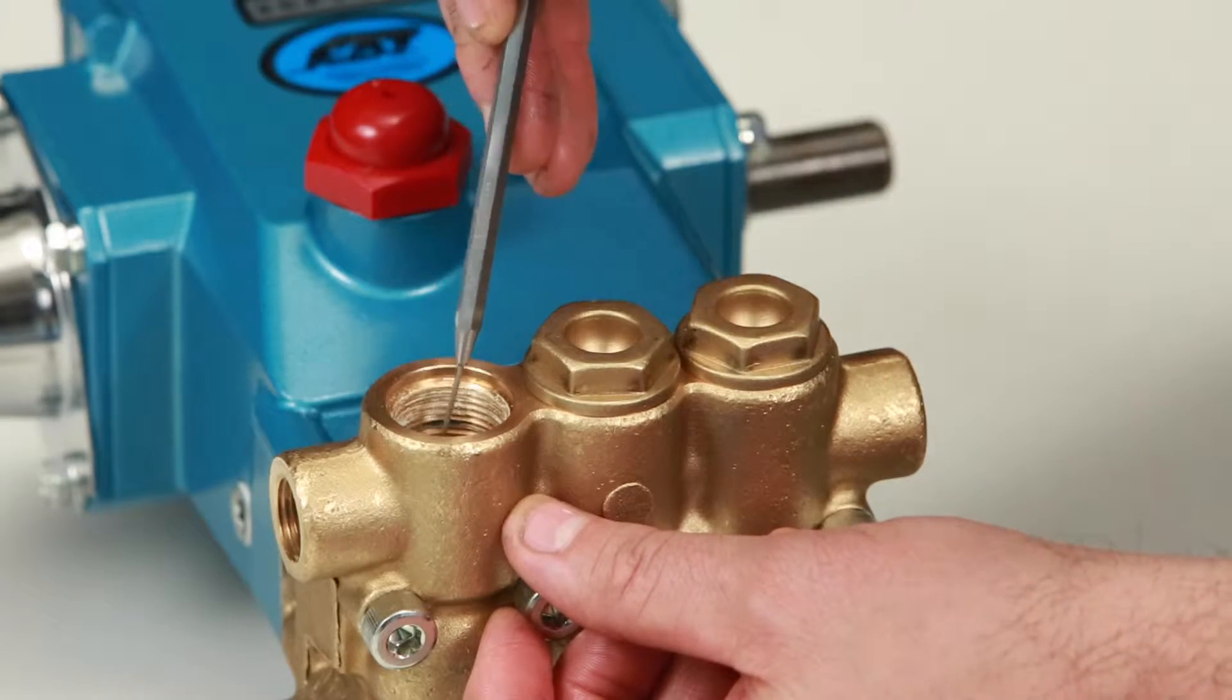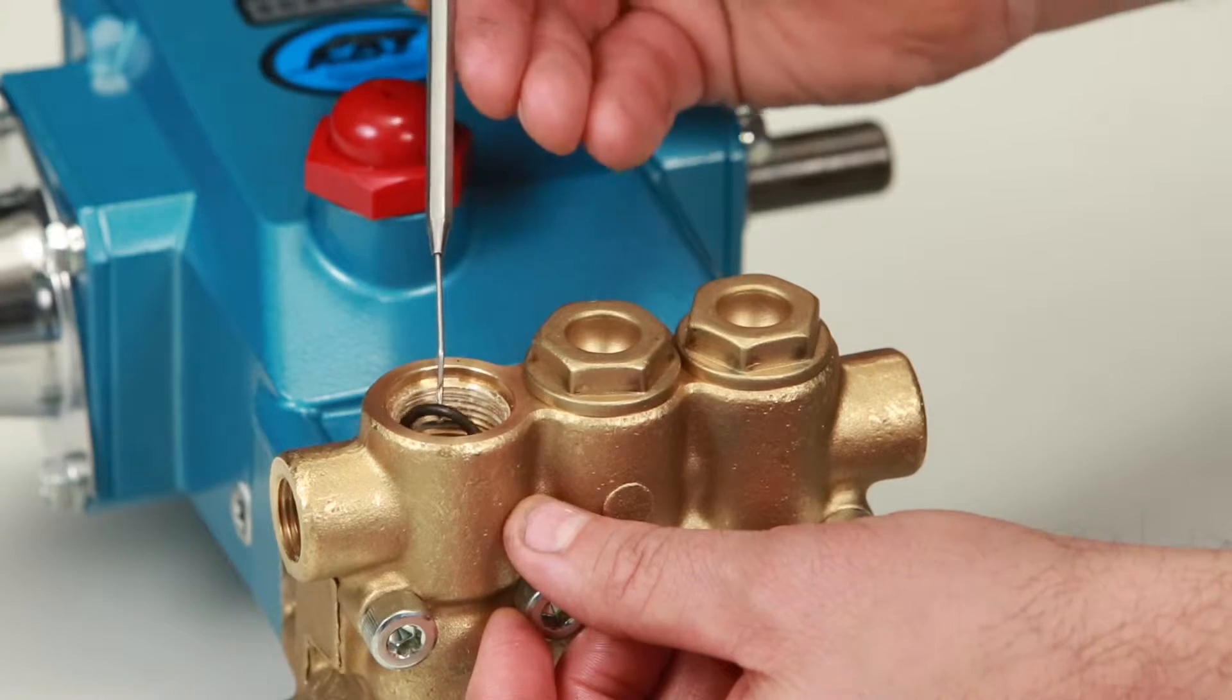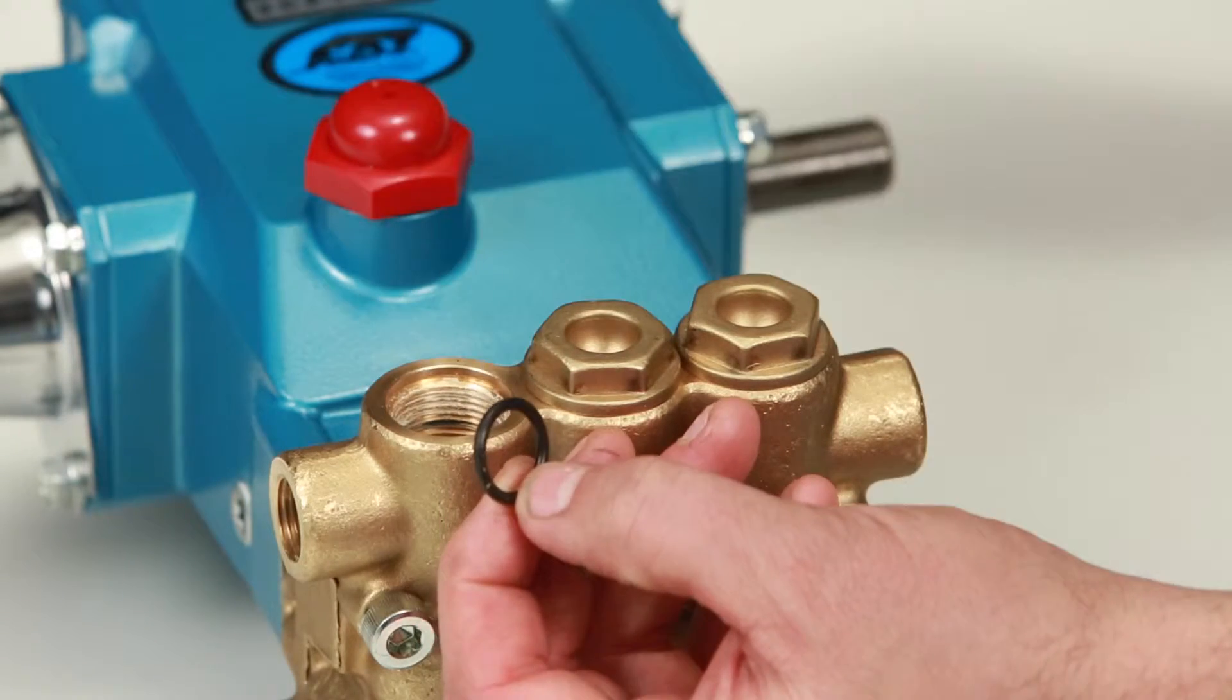When removing the valve assembly, the O-ring may remain in the manifold. Using a small pick or screwdriver, reach into the manifold to remove.